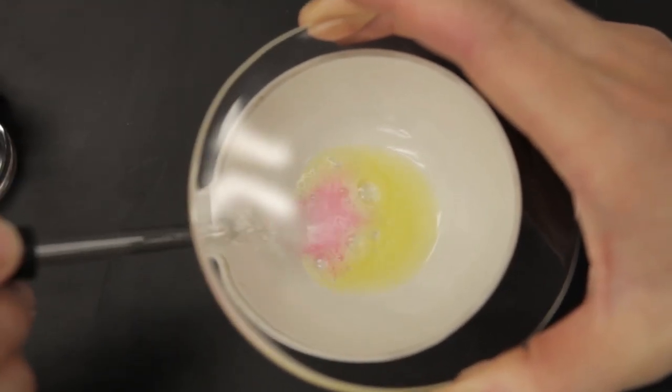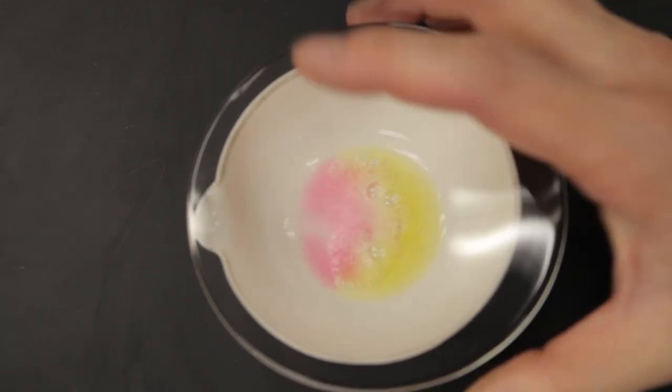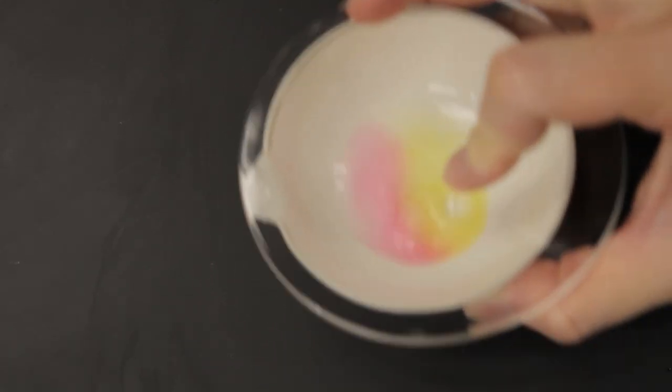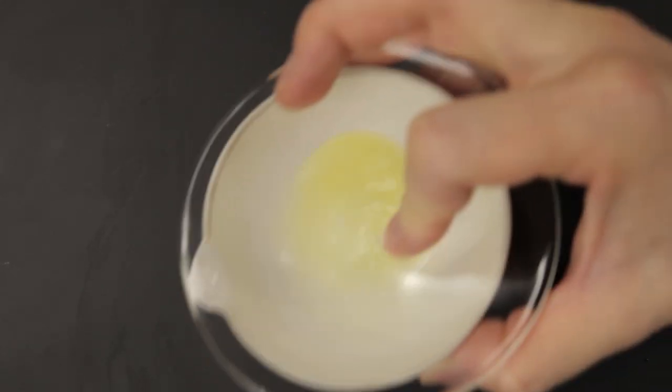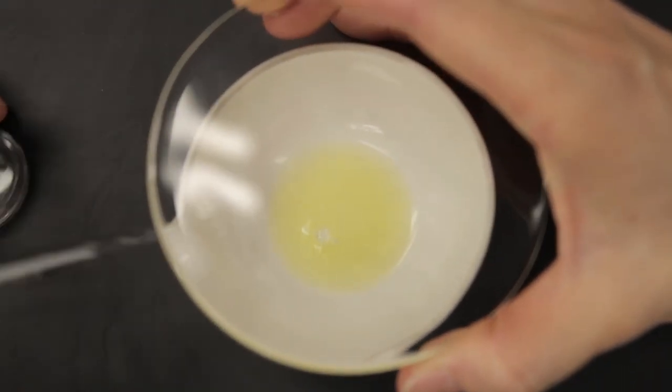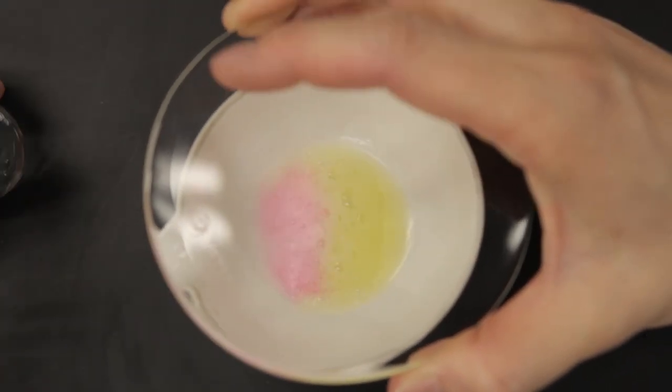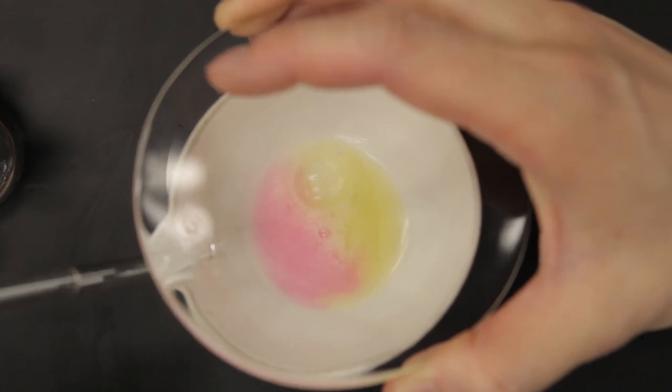Add the 3.0 molar hydrochloric acid dropwise using a medicine dropper down the spout of the evaporating dish without removing the watch glass. Add the hydrochloric acid until the solution is faint pink.